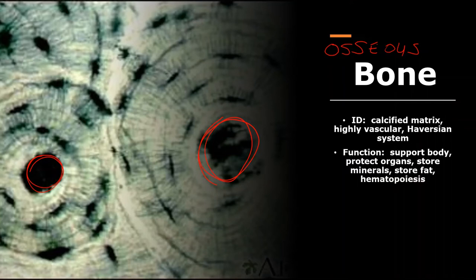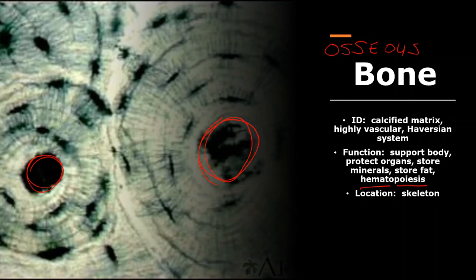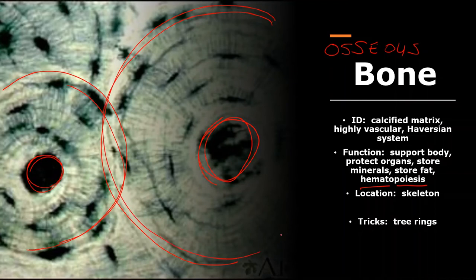The functions of bone include supporting the body, protecting organs, storing calcium and phosphate minerals, storing fat in the bone marrow, and hematopoiesis — the blood-making process. All blood cells are born in the bone marrow, so bone has many functions beyond just support. Location: the bones of the skeleton.